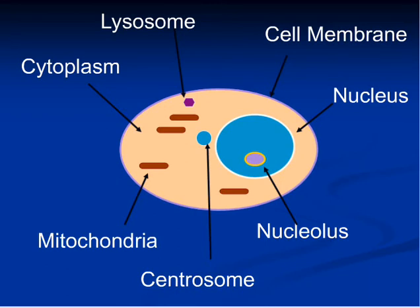There are some components, or organelles, that are present in all cell types, but there may be exceptions. For example, red blood cells — also known as erythrocytes — are so packed with hemoglobin to perform oxygen transportation efficiently that they lack some important components, most importantly the nucleus. Platelets are another type of cell found in blood that also do not have a nucleus.